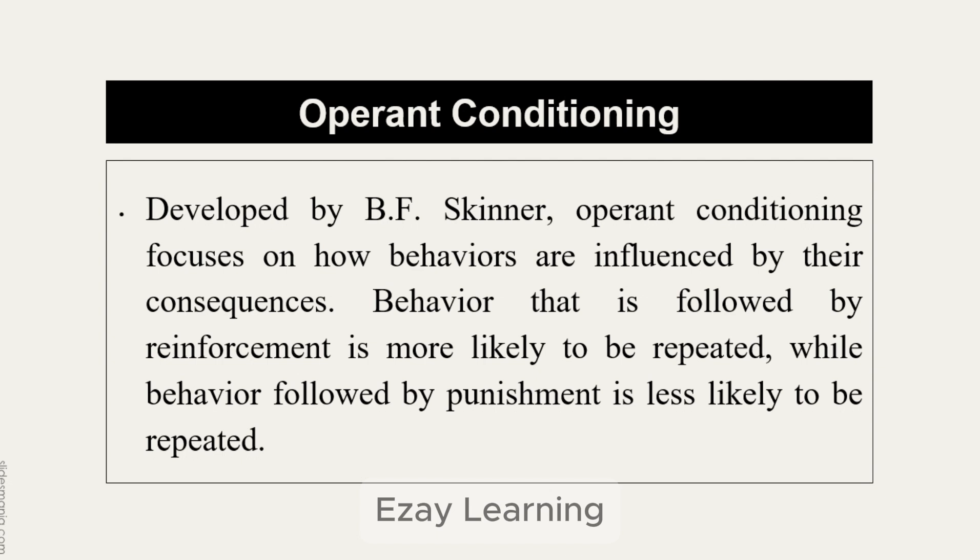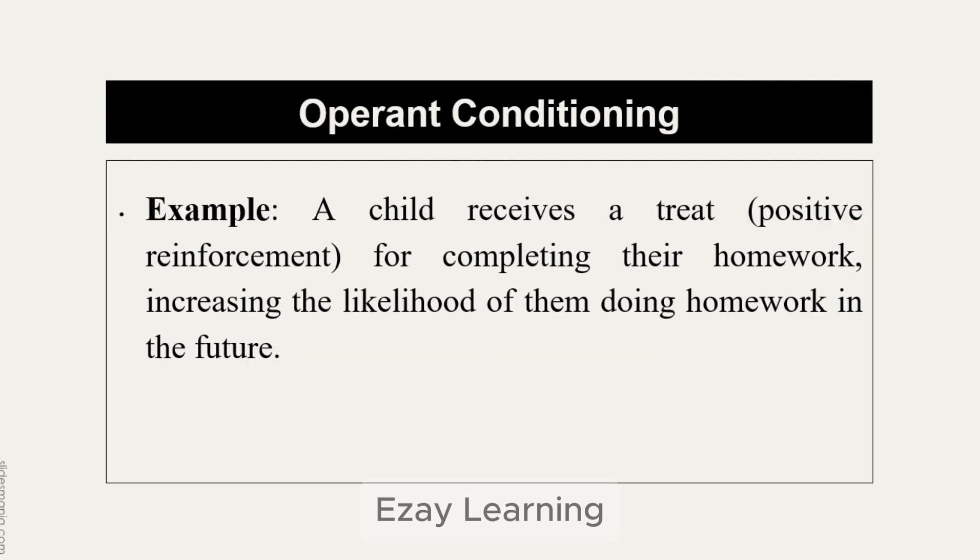So operant conditioning is all about the consequence — either reinforcement or punishment. For example, a child receives a treat, which is positive reinforcement, for completing their homework, increasing the likelihood of them doing homework in the future.